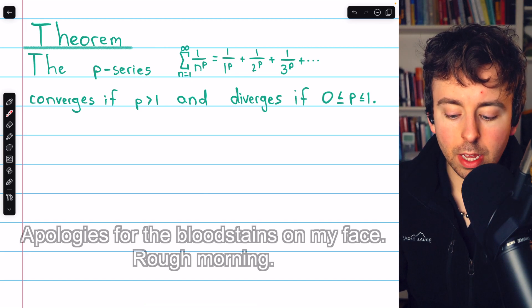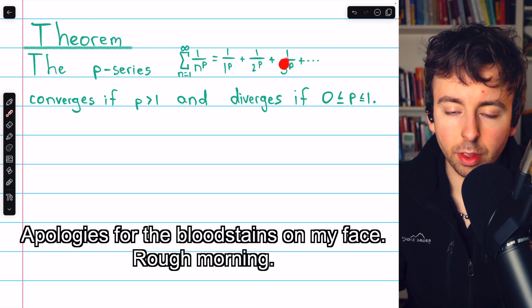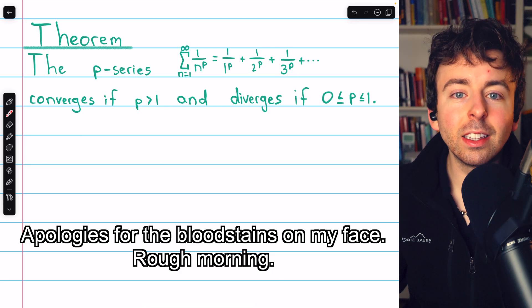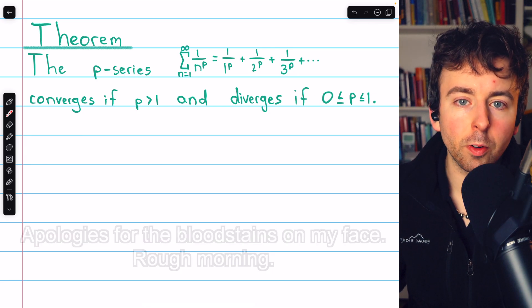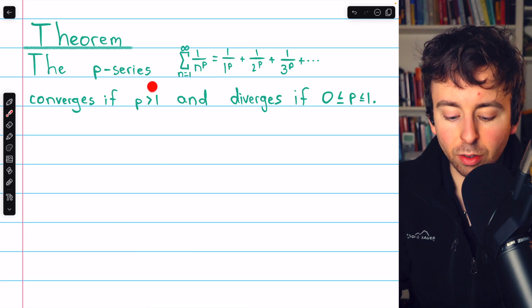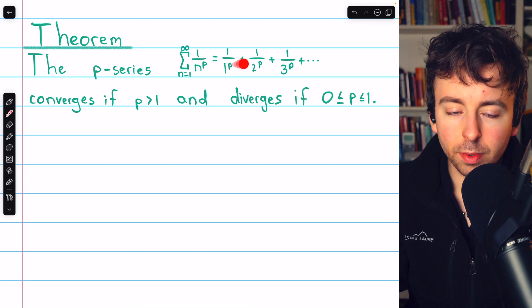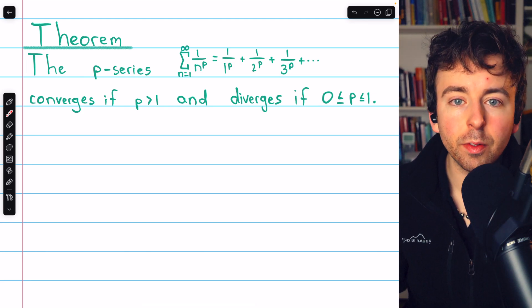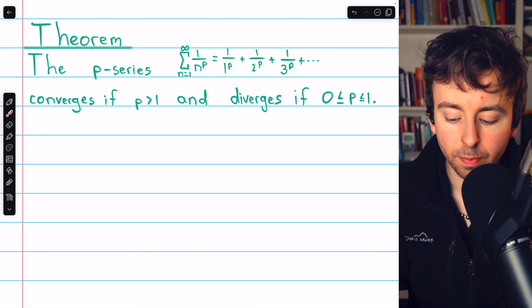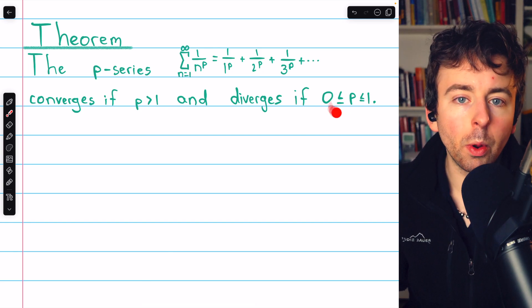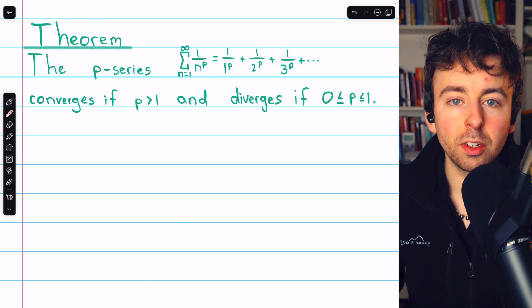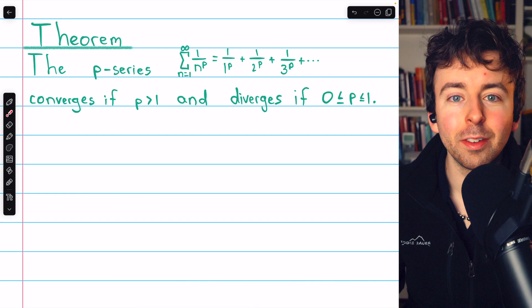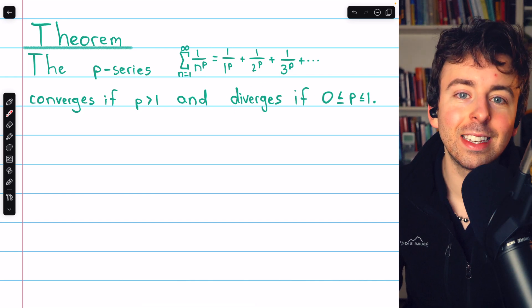The p-series, 1 over 1 to the p, plus 1 over 2 to the p, plus 1 over 3 to the p, etc., has very simple convergent-divergent behavior. If p is greater than 1, then the terms get small fast enough for the series to converge. If p is between 0 and 1, then the terms do not get small fast enough, and so the series diverges.